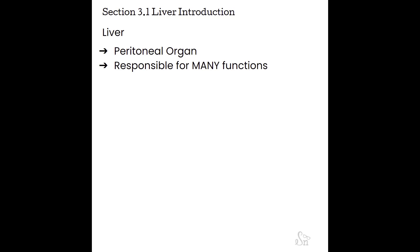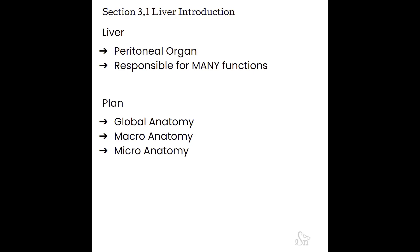As we study the liver anatomy and physiology, we'll start with a more global look — where it is in the body, the coverings, what surrounds it — and then take a closer look at the actual anatomy, including microanatomy and macroanatomy. This will lead into learning about liver physiology. Once you've learned through diagrams, we'll look at how the liver appears by ultrasound, including key structures, landmarks, normal appearance, liver protocols, and patient preps.